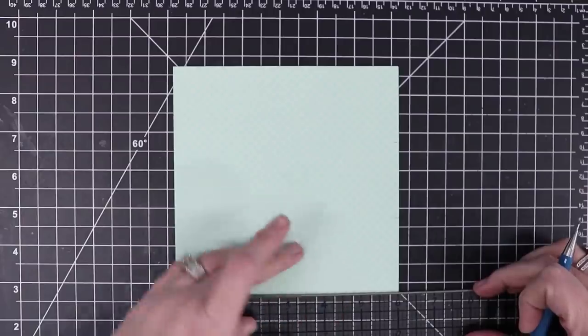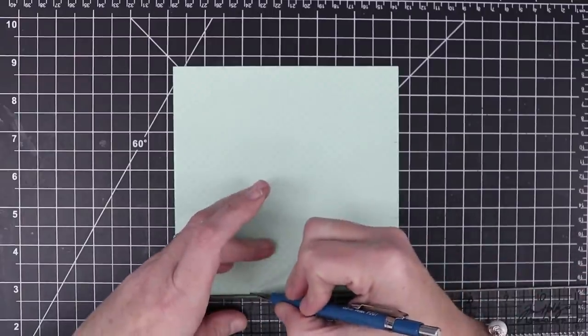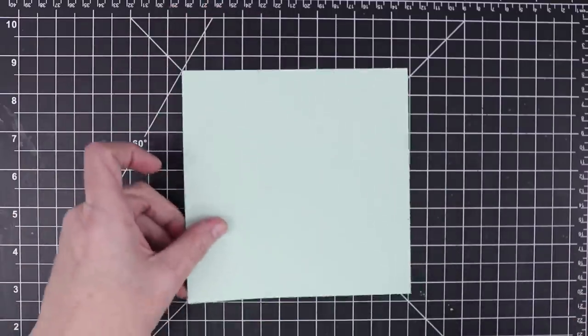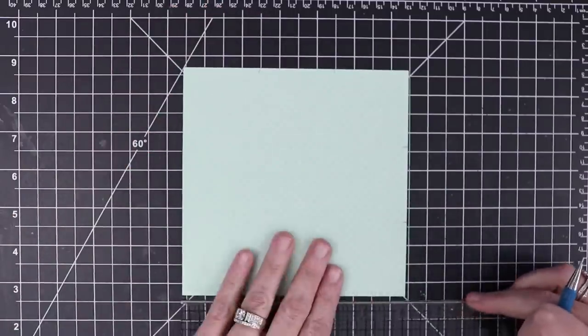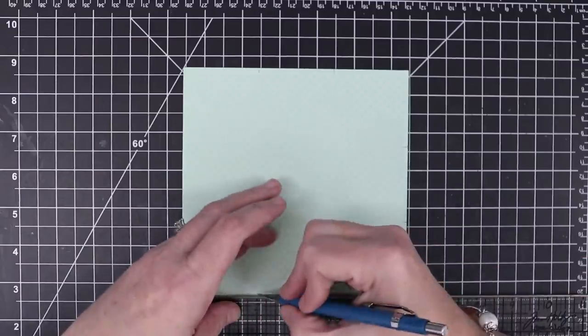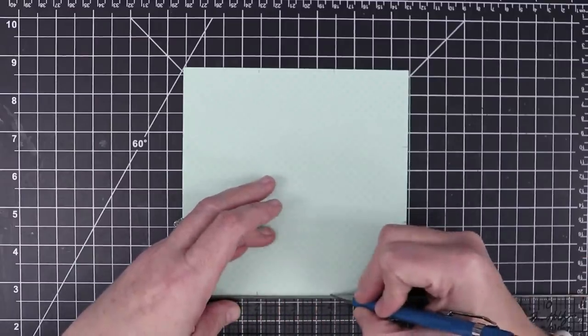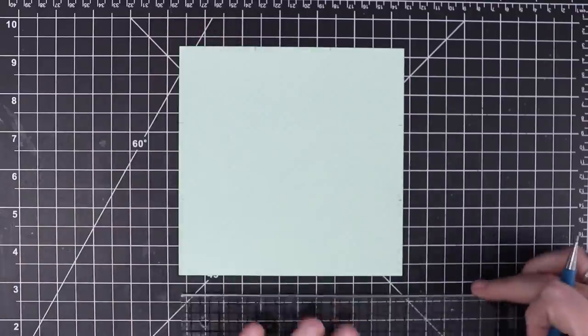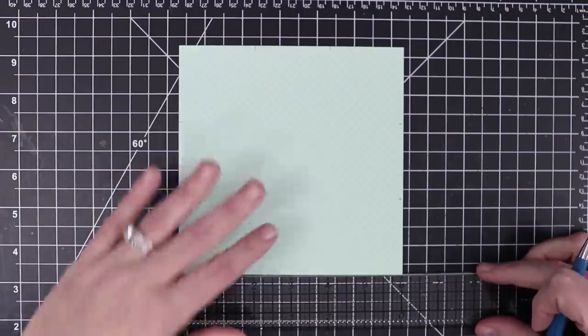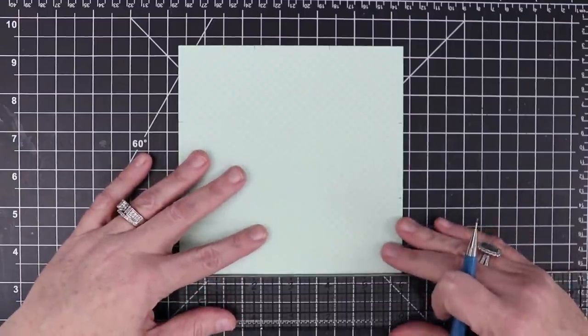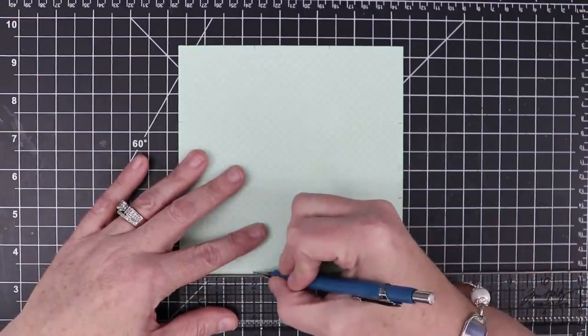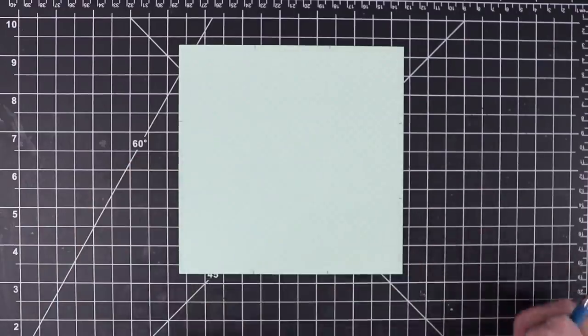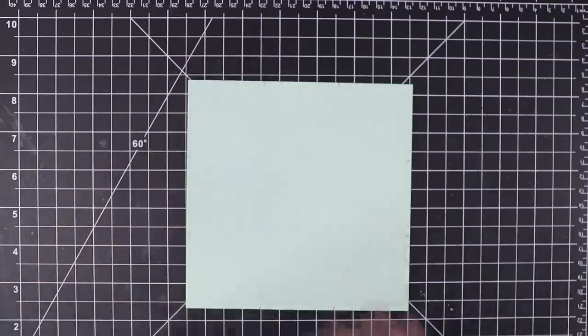So I'm just going to run this around and make my marks. Now here's the thing, if you're making a different project that would call for a scoreboard, instead of scoring on the measurements it tells you, you're going to mark the measurements it tells you at first. So just go around and make your marks 2 and 4. I'm doing that on all sides. Now I'm going to show you different ways of doing it with these marks we've made.